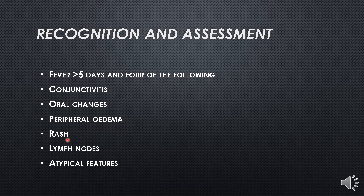The rash is polymorphous and will not have vesicles or crusts — only a polymorphous rash. Lymph nodes present as unilateral cervical lymph node enlargement with a diameter of more than 1.5 centimeters.